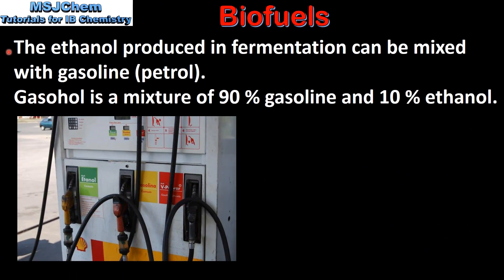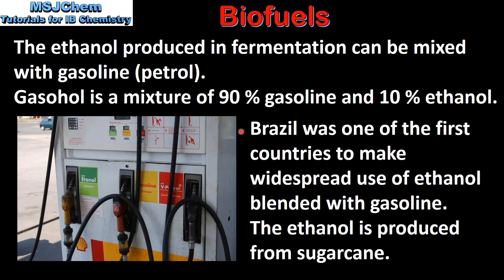The ethanol produced in fermentation can be mixed with gasoline. For example, gasohol is a mixture of 90% gasoline and 10% ethanol. Brazil was one of the first countries to make widespread use of ethanol blended with gasoline. The ethanol is produced from sugarcane.